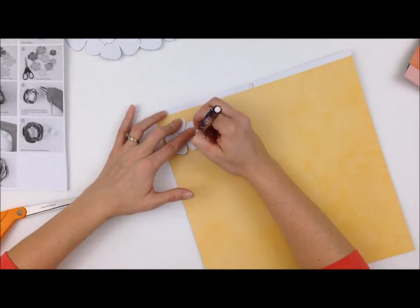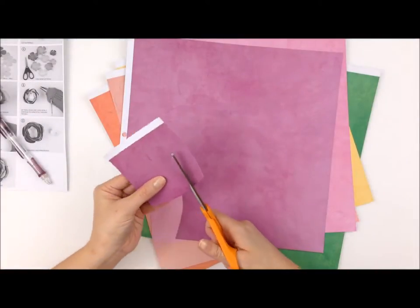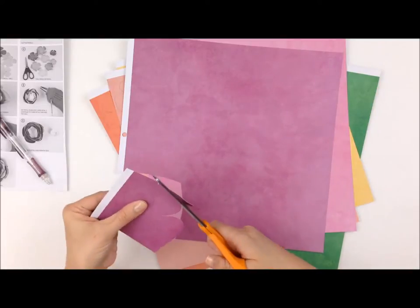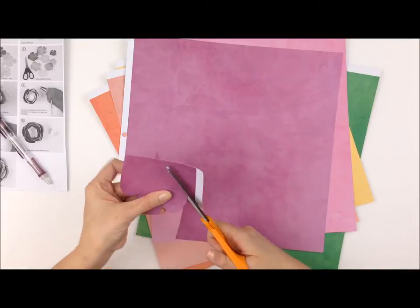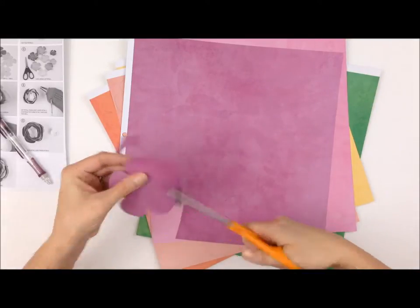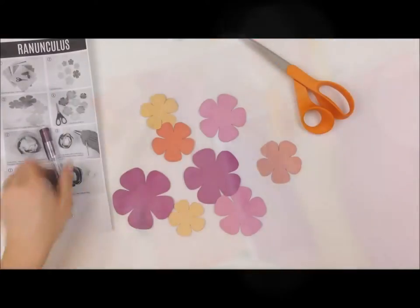So the next thing you want to do is trace with a pencil all the templates onto the patterned papers that you want to use and then of course cut them out. Now this part of the process can be a little tedious so maybe sit back and watch your favorite TV show while you're doing it but this is a great option if you don't have a die cut machine or you don't have to get it out.